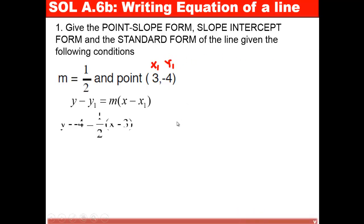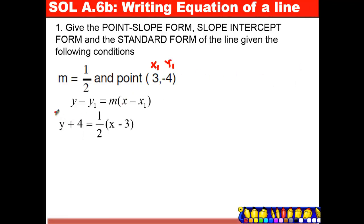I can replace m by the slope 1/2. Y₁ is equal to negative 4 and x₁ is equal to 3. I will have y minus y₁, and y₁ is equal to negative 4. So I will have y minus negative 4 equals 1/2 times x minus 3. Since I have a double negative, we can write that as y plus 4. This is now our point-slope form.